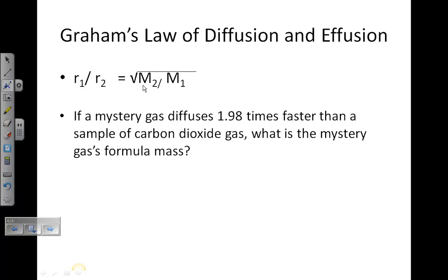For example, if you have a mystery gas and it diffuses 1.98 times faster than CO2, what is the formula mass? You can use this formula to identify the gas. This tells you the left side of the equation, so 1.98 times faster is the ratio of R1 over R2.